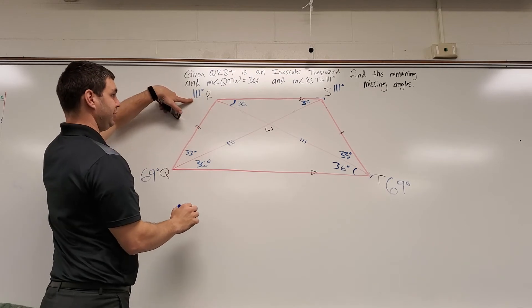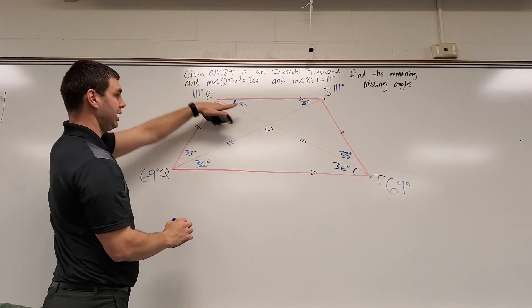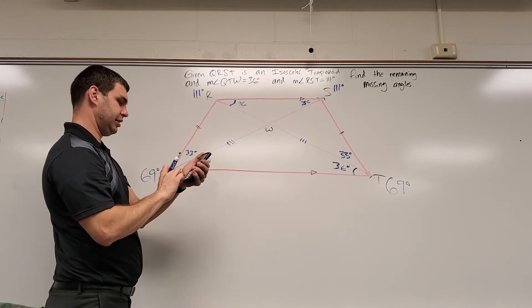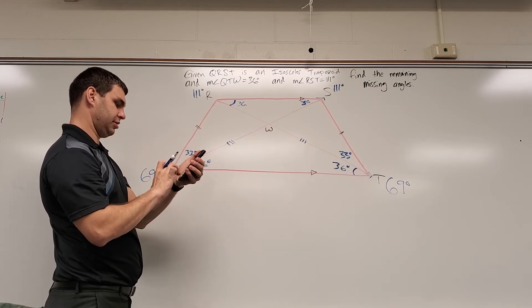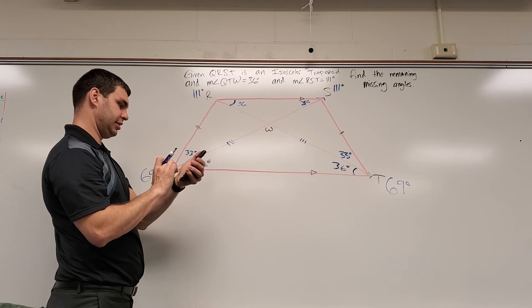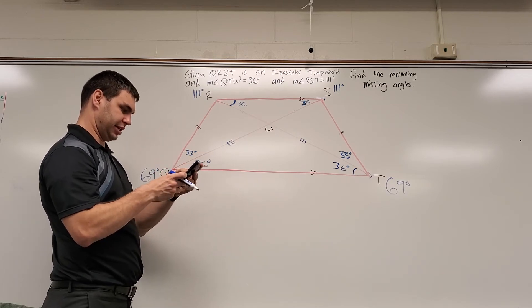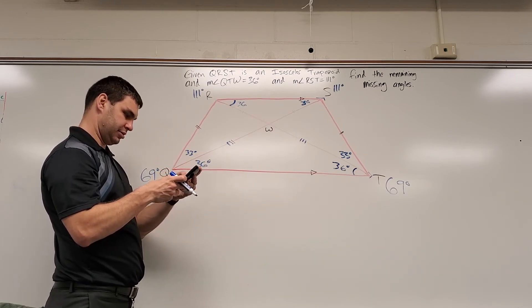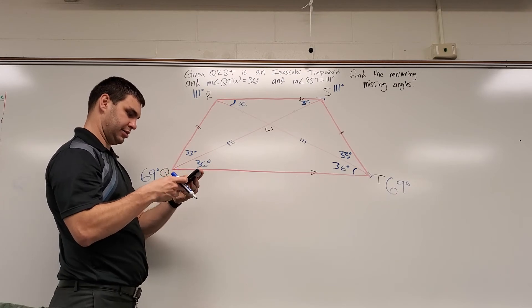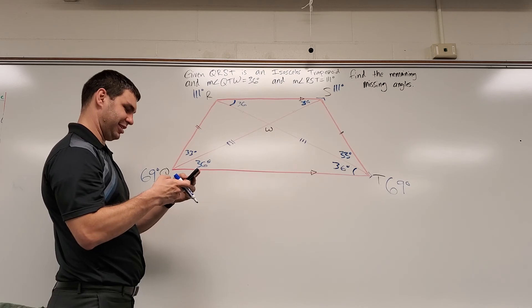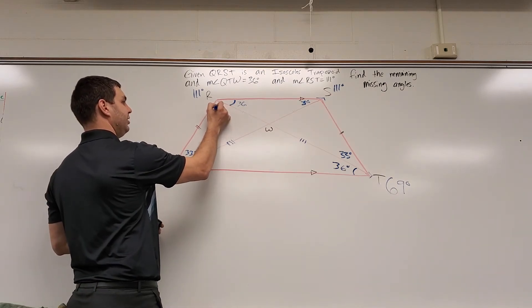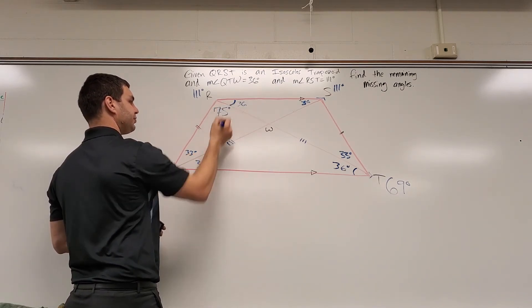So 111 minus 36 is... someone messed with this calculator. Reset. Yes. All right, 111 minus 36, 75. I probably could have just done it in my head. It is 75 degrees.